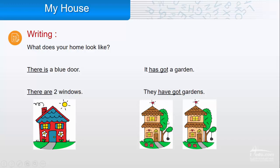Here, if I talk about one house I say it has got a garden. If I talk about two houses we say they have got gardens.